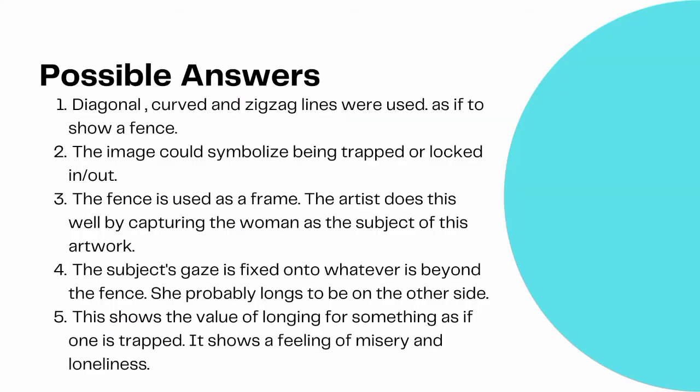Here are the possible answers for image two. Number one, diagonal, curved, and zigzag lines were used as if to show a fence. Number two, the image could symbolize being trapped, locked in, or locked out. Number three, the fence is used as a frame; the artist captures the woman as the subject of this artwork. Number four, the subject's gaze is fixed onto whatever is beyond the fence — she probably longs to be on the other side. And five, this shows the value of longing for something as if one is trapped. It shows a feeling of misery and loneliness.